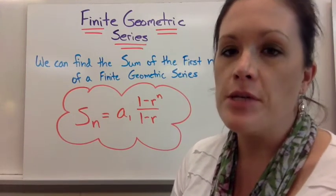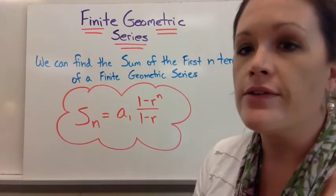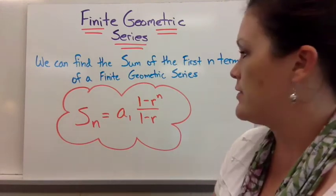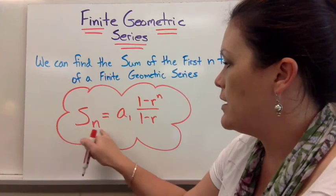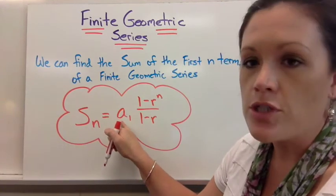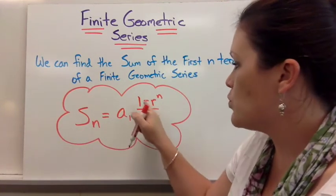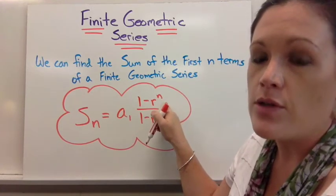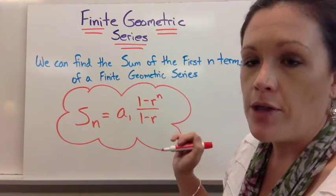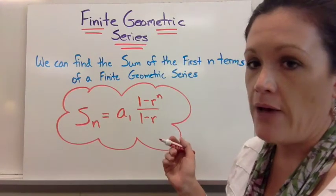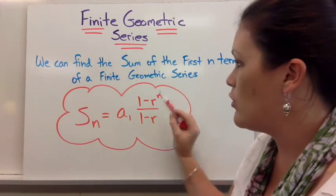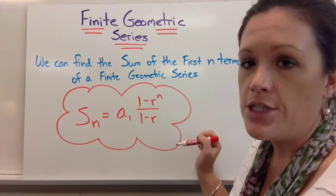Let's talk about finite geometric series. We can find the sum of a finite geometric series using our formula. We have s sub n equals a sub 1, which is our first term, times 1 minus r, which is our common ratio. So that means like if it's multiplying by 3, r would be 3. And if it's dividing by 2, r would be 1 half. r is that common ratio between your terms in a geometric sequence.